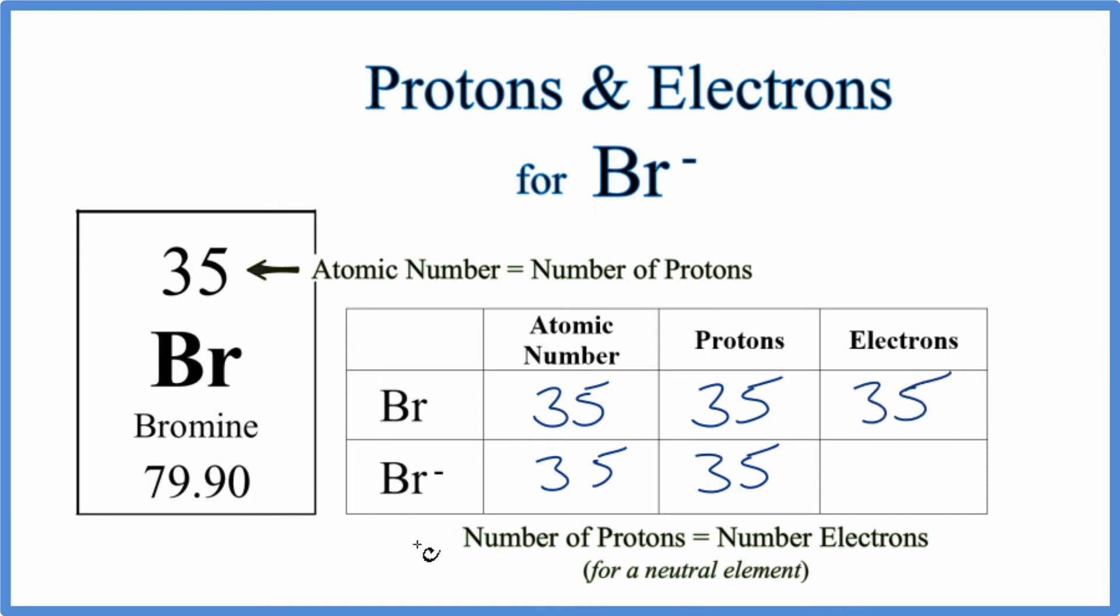For the bromide ion, think of it this way. Normally we consider there to be a 1 here, though we don't write it. This negative means we have one extra electron. Electrons are negative, so instead of 35, we have 36 electrons for Br-.